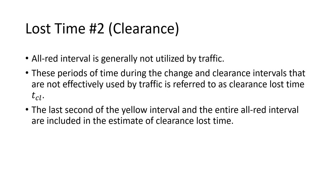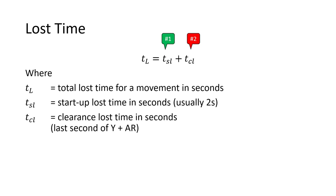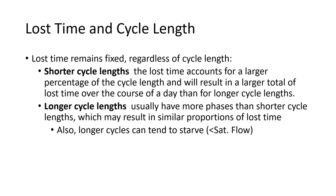During the clearance intervals, traffic cannot effectively use that time. The change interval (yellow) and the clearance interval (all red) — cars can't effectively use those, or they shouldn't be. Cars will still finish moving through on yellow, but won't use all of it. The last second of yellow and all of the all-red time is considered lost time. So adding startup lost time plus clearance interval lost time gives us total lost time: two seconds at the beginning plus one second of yellow plus all the all-red time.